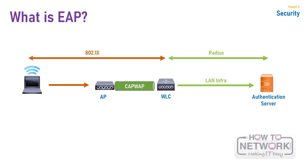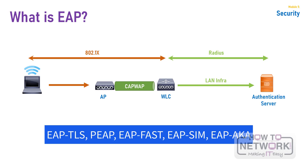Be aware that there are approximately 40 different types of EAP. Some of the most common types include EAP-TLS, PEAP, EAP-FAST, EAP-SIM for GSM, and EAP-AKA for UMTS.